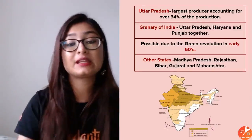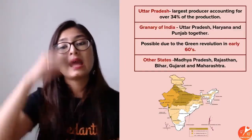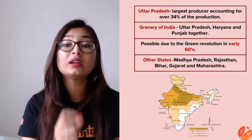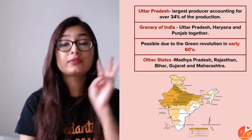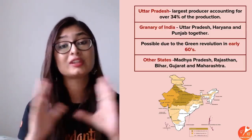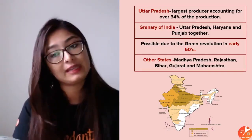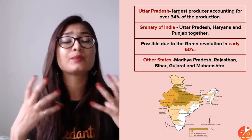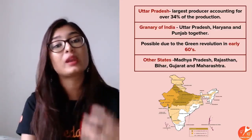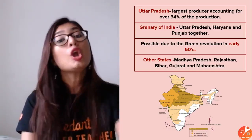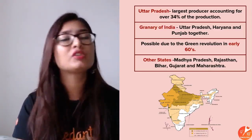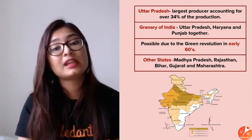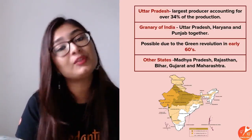The major wheat-producing states are Uttar Pradesh, Haryana, and Punjab. Uttar Pradesh is the largest producer, accounting for over 34% of total production. These three states together are known as the 'Granary of India.' The Green Revolution of the 1960s significantly transformed Indian wheat production from subsistence to commercial farming. Other wheat-producing states include Madhya Pradesh, Rajasthan, Bihar, Gujarat, and Maharashtra.